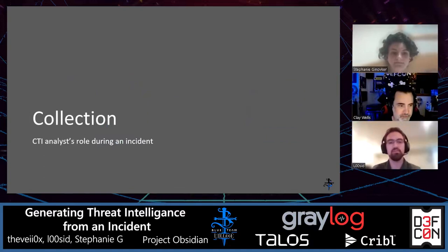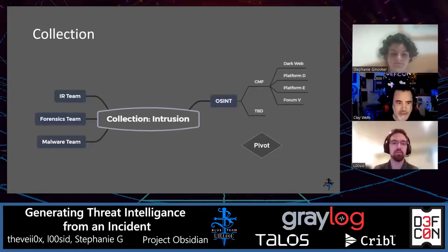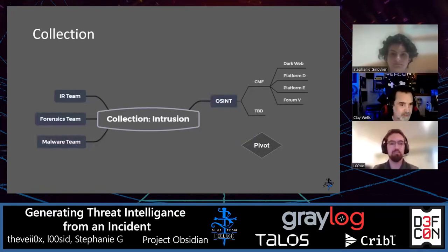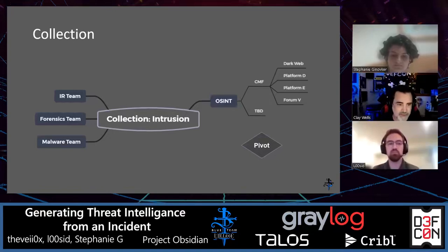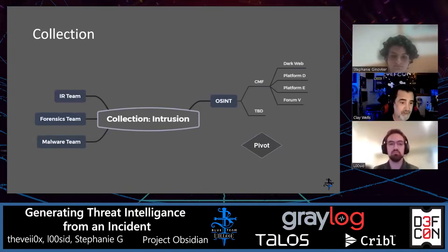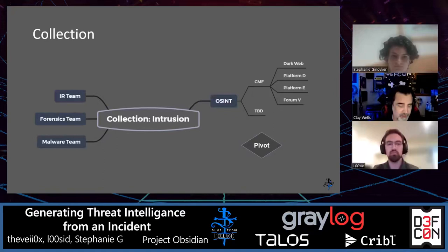Touching on collection: artifacts will be collected from different teams involved during the course of an incident — our IR team, forensics team, and malware analysis team, who might get some artifacts from the forensics team. All these teams work together, and some people may be on multiple teams — every organization will look different. Additional data and information will come from external sources through OSINT on existing data. OSINT includes sources documented in our Collection Management Framework, as well as sources discovered through the process of pivoting.